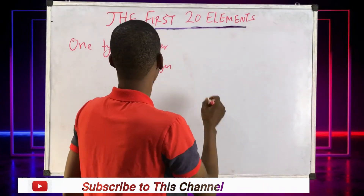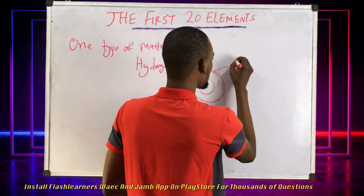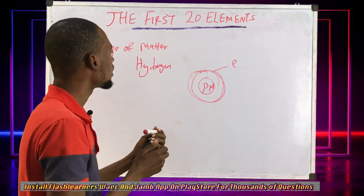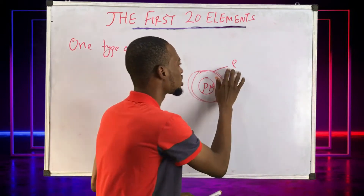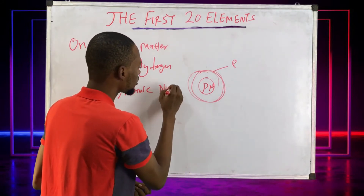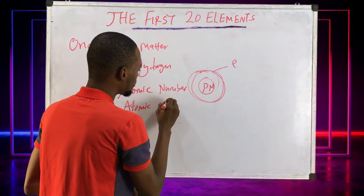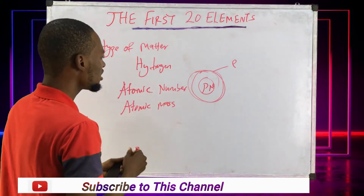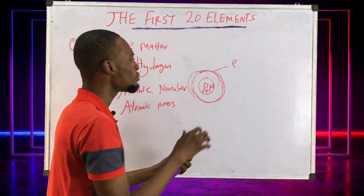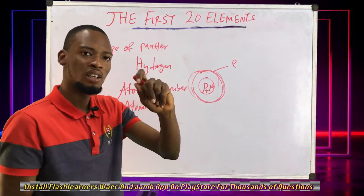An element or atom has a nucleus, electrons, protons, and neutrons. Electrons revolve in the atomic shell, and protons and neutrons are in the nucleus of the atom. Every atom has a number — that's what we call the atomic number. Every atom also has a mass, which is called the atomic mass. The atomic mass is the number of protons and neutrons inside the atom, while the atomic number is the number of electrons.